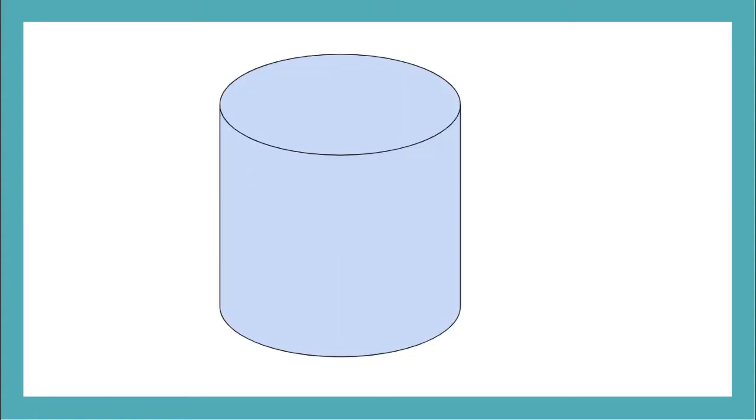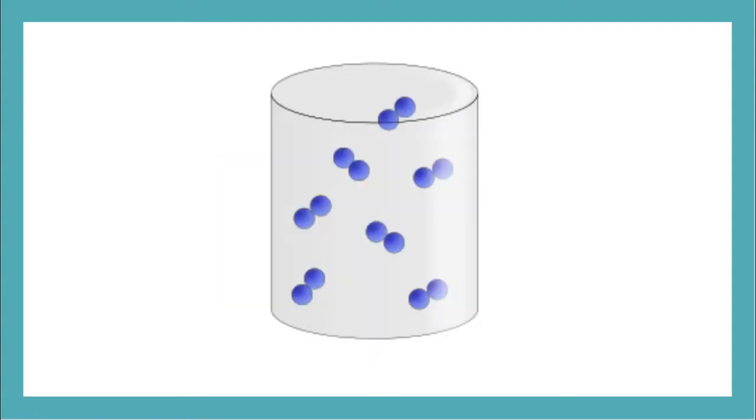Gases are made up of matter with no specific volume or shape. Gases will take up as much space as they can, filling any container. Gases are able to change their shape and their volume because their atoms and molecules move freely and quickly.